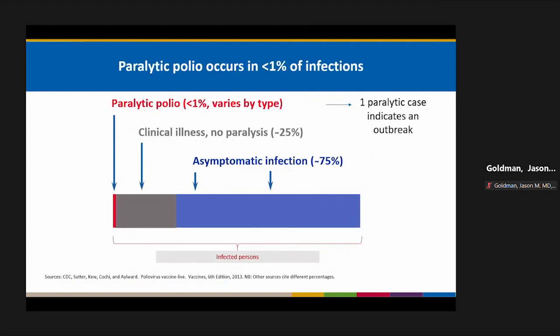It's important to remember that most people infected with polio virus don't have any symptoms at all — seventy-five percent are asymptomatic. Another twenty-five percent will have clinical illness, usually diarrhea, but no paralysis. Those who develop paralytic polio represent less than one percent of all infections. So if one paralytic case is identified, that indicates an outbreak — there could be hundreds or even thousands of people infected.